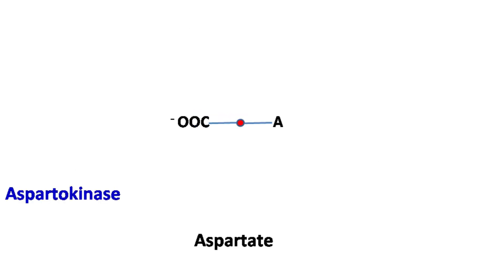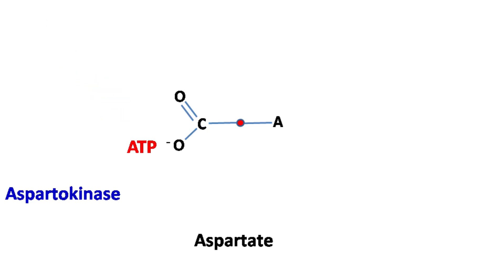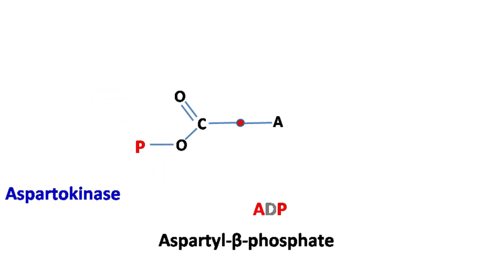In the first step, aspartate is phosphorylated by ATP in the presence of the enzyme aspartokinase to give aspartyl beta phosphate.